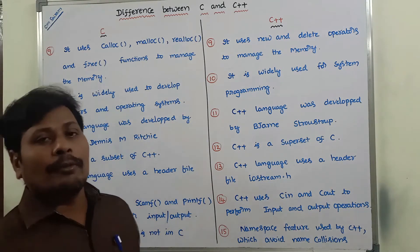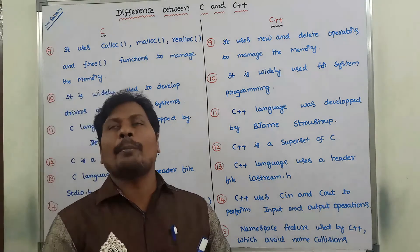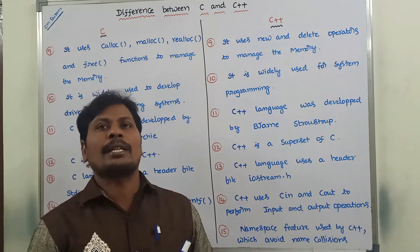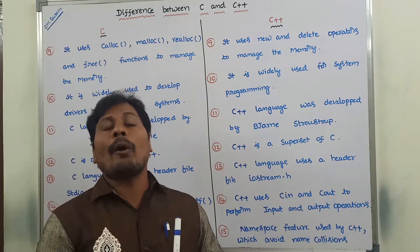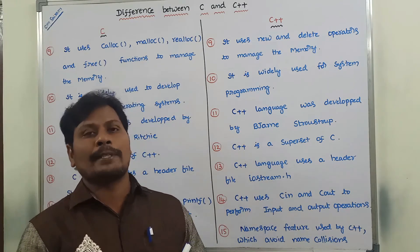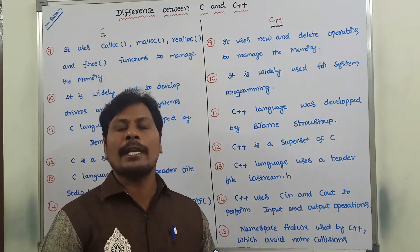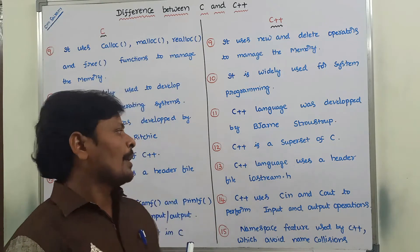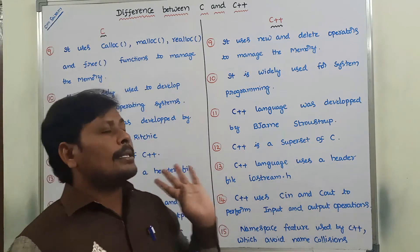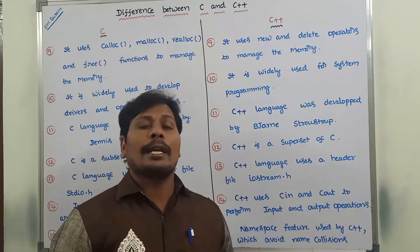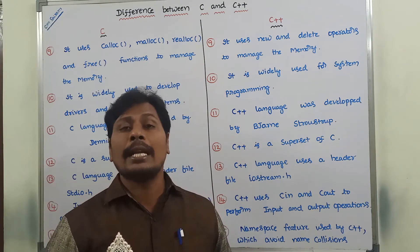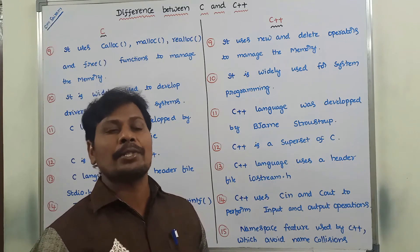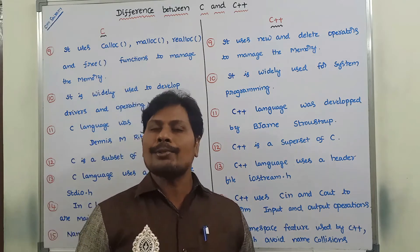C language was developed by Dennis M. Ritchie. He is also called the father of C language. Whereas C++ language was developed by Bjarne Stroustrup. So the father of C++ language is Bjarne Stroustrup.